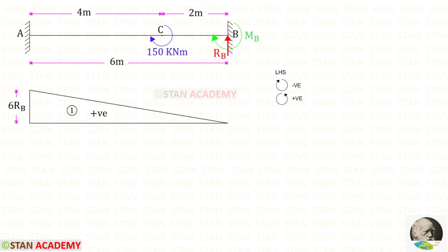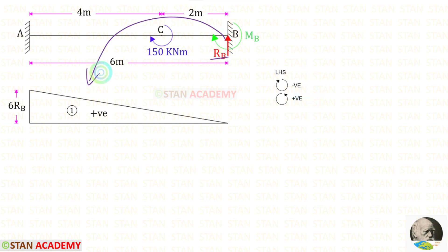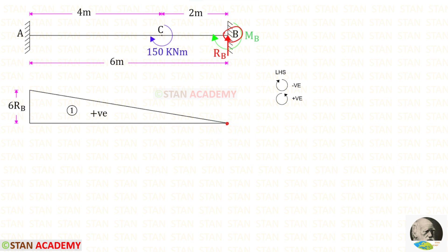First, let us draw the bending moment diagram due to the vertical reaction Rb. We are finding the bending moment values about point A from point B. We have to follow the left-hand side rule: clockwise will be negative and anticlockwise will be positive. Rb is acting in the anticlockwise direction, so it will be positive and the distance is 6, giving a moment of 6Rb. At point B the moment is 0 and at point A it is 6Rb, so we get a triangular shaped diagram with positive moment.